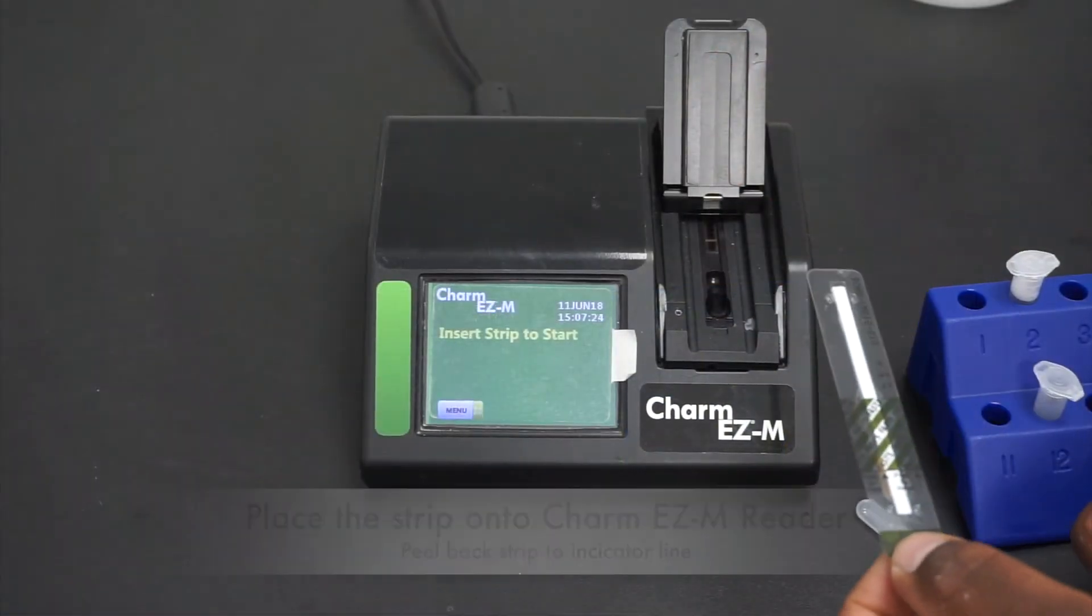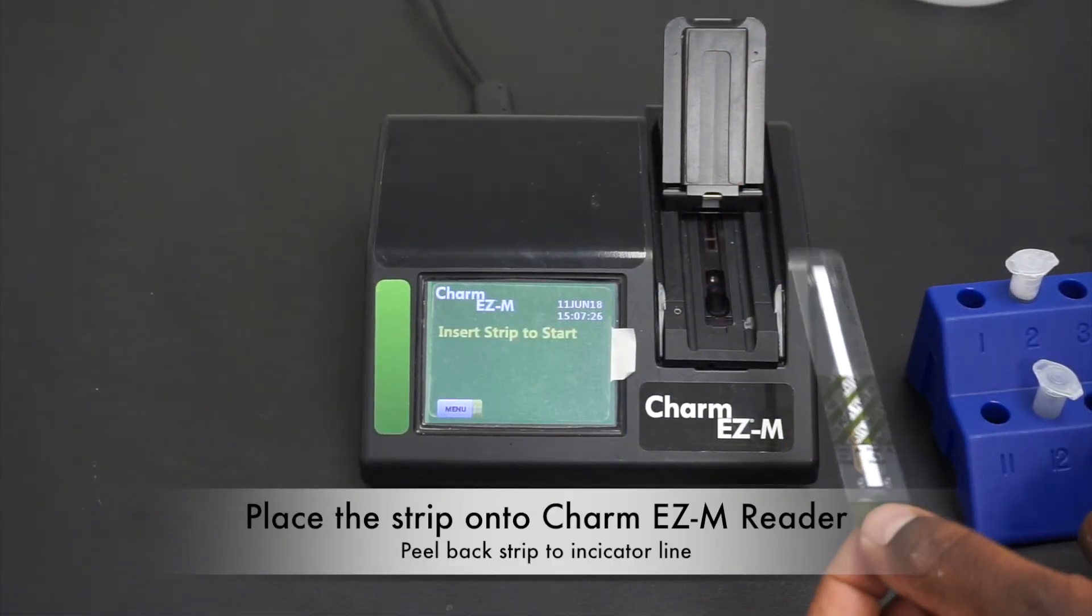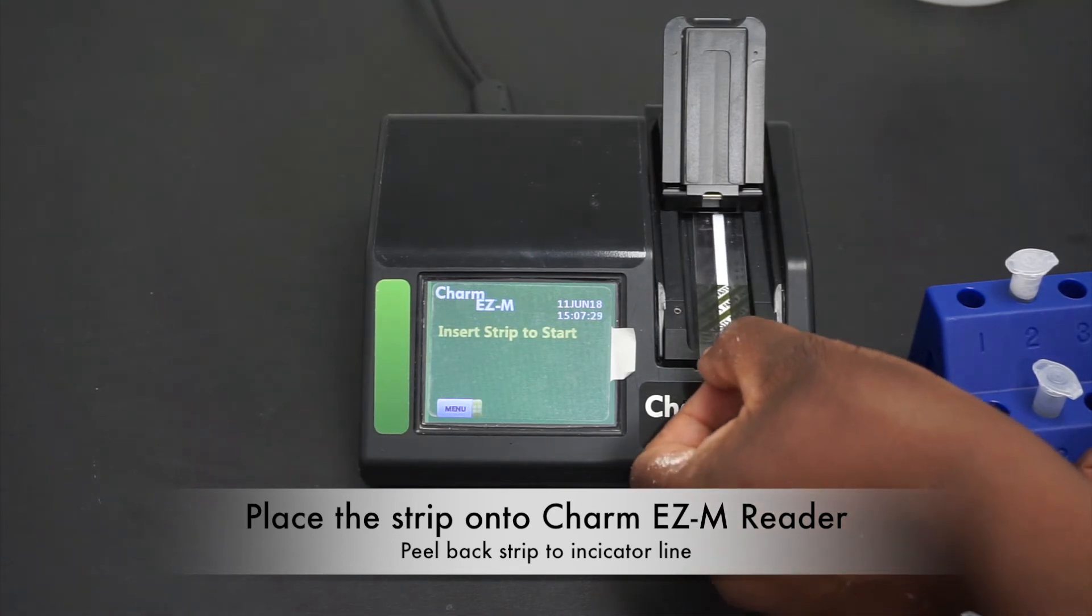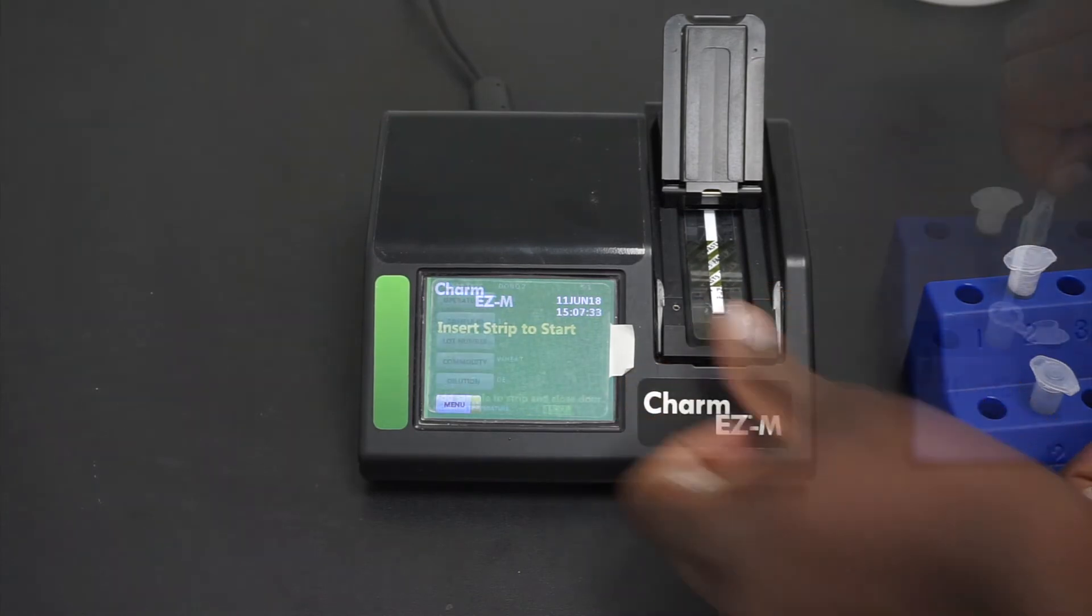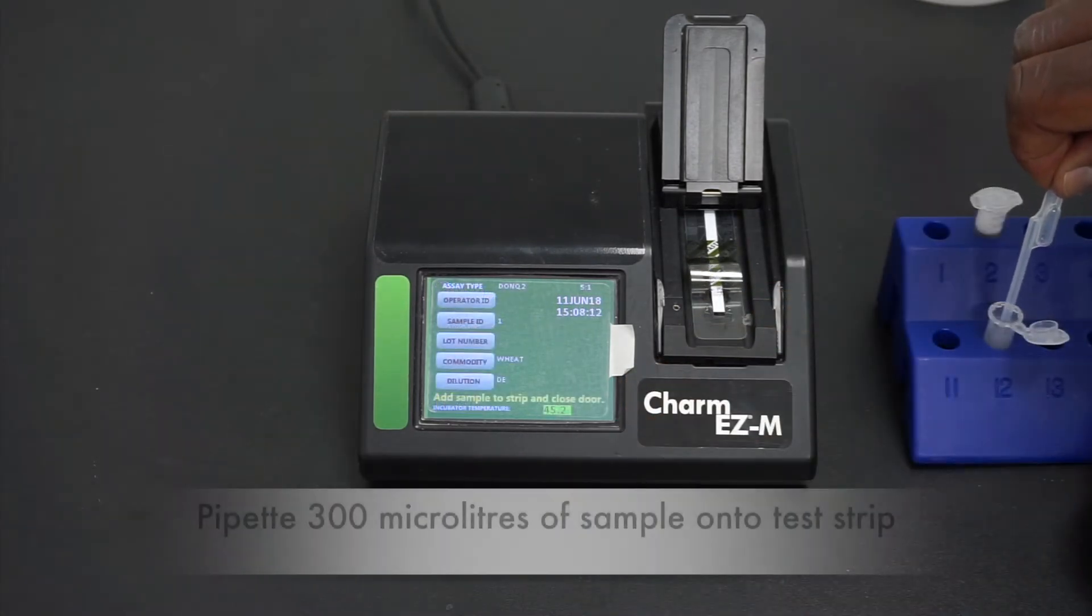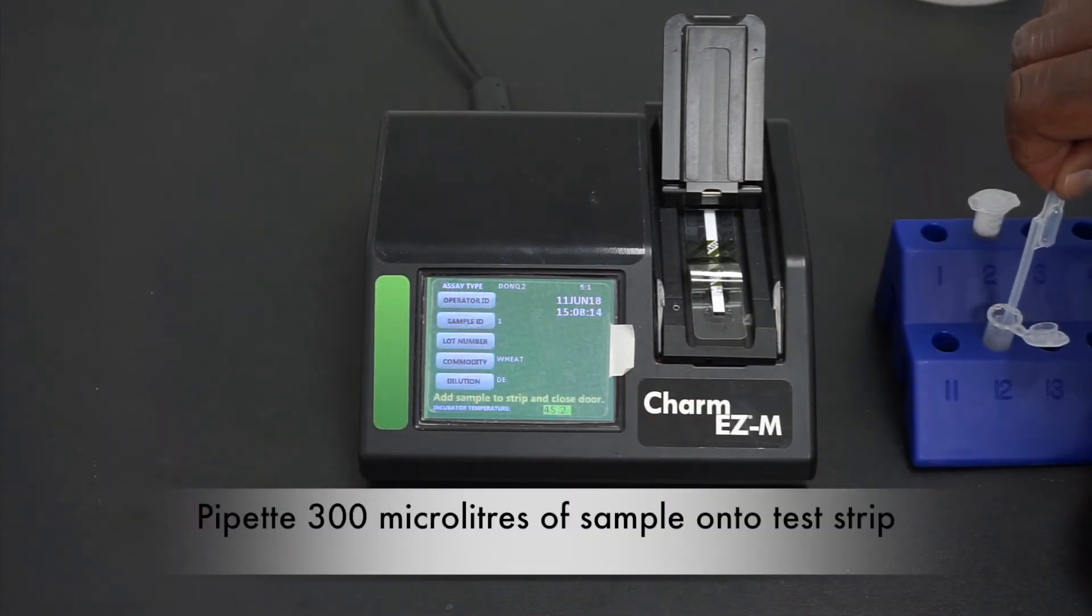Insert your DonQ-2 strip into your Charm EZM reader. Pipette 300 microliters of your diluted sample onto the test strip.